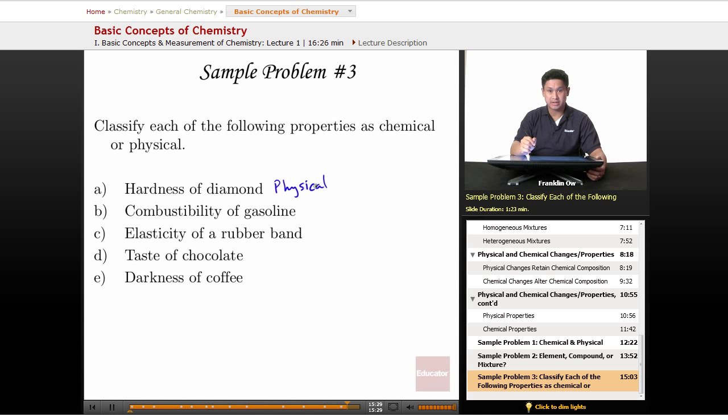Part B, combustibility of gasoline. Combustibility refers to how reactive gasoline can be, especially in the presence of a flame. So this is going to be a chemical property.